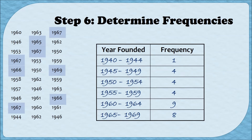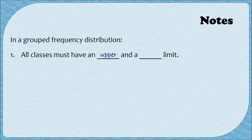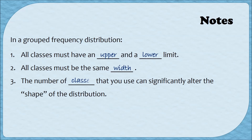Before we do another example, there are three notes to look at. Note one: in a grouped frequency distribution, all classes must have an upper and a lower limit — no categories like 'six feet or taller' or '$7 or less.' Note two: all classes must be the same width — we added the same value to each lower limit every time to keep grouping consistent. Note three: the number of classes you use can significantly alter the shape of the distribution, which we'll discuss more in video four.